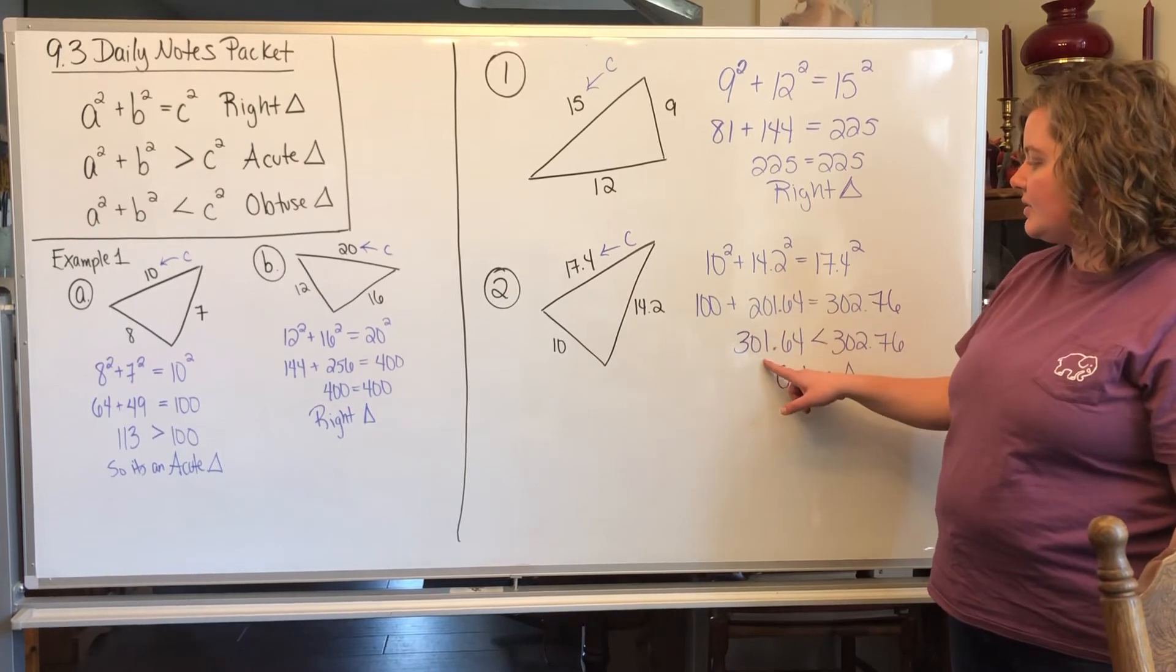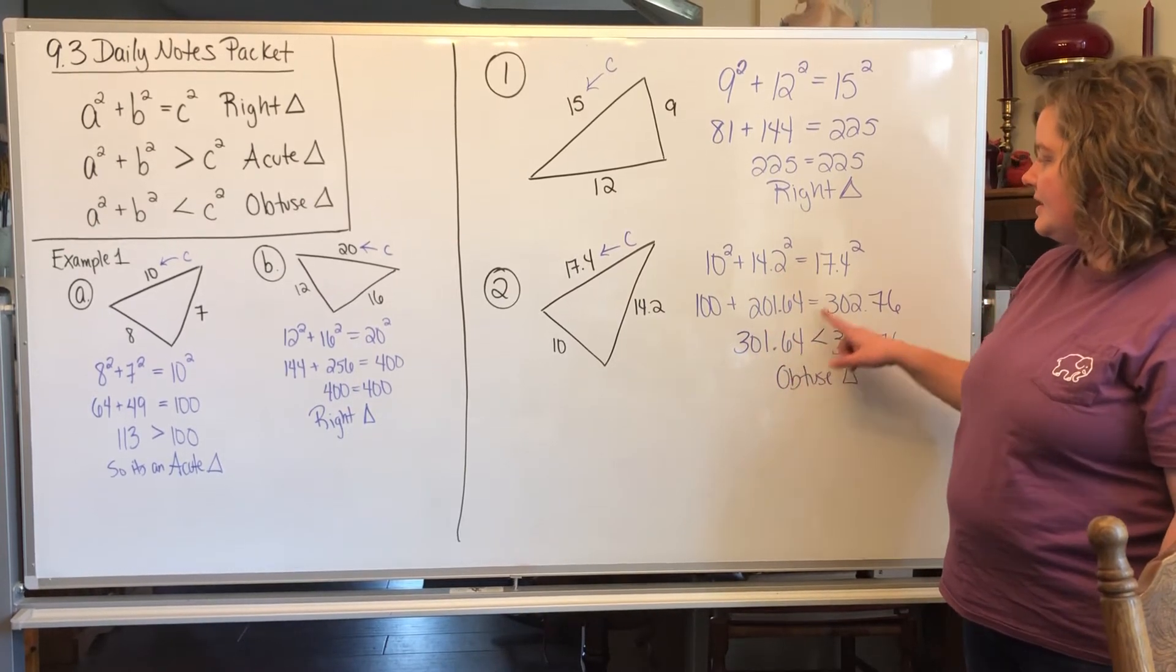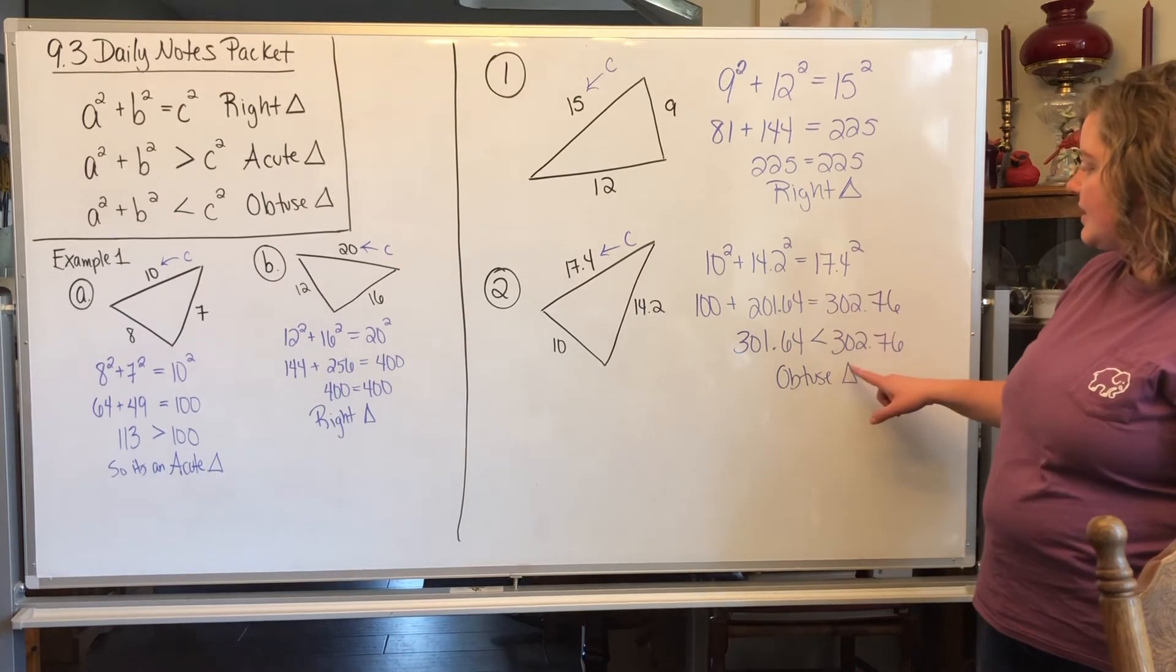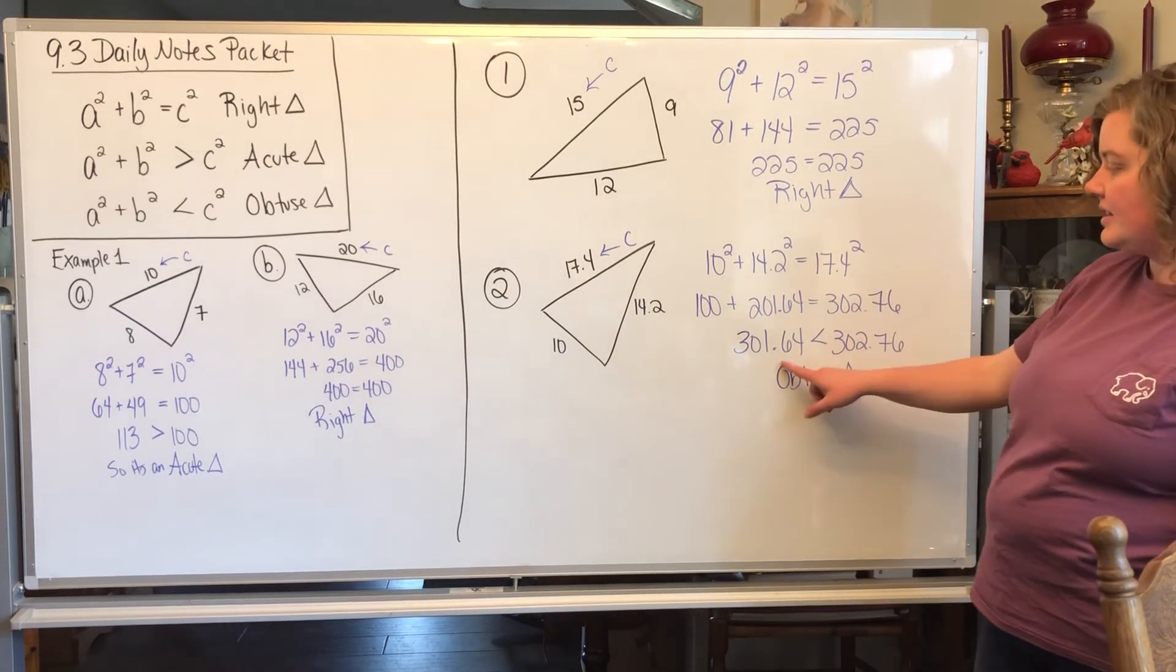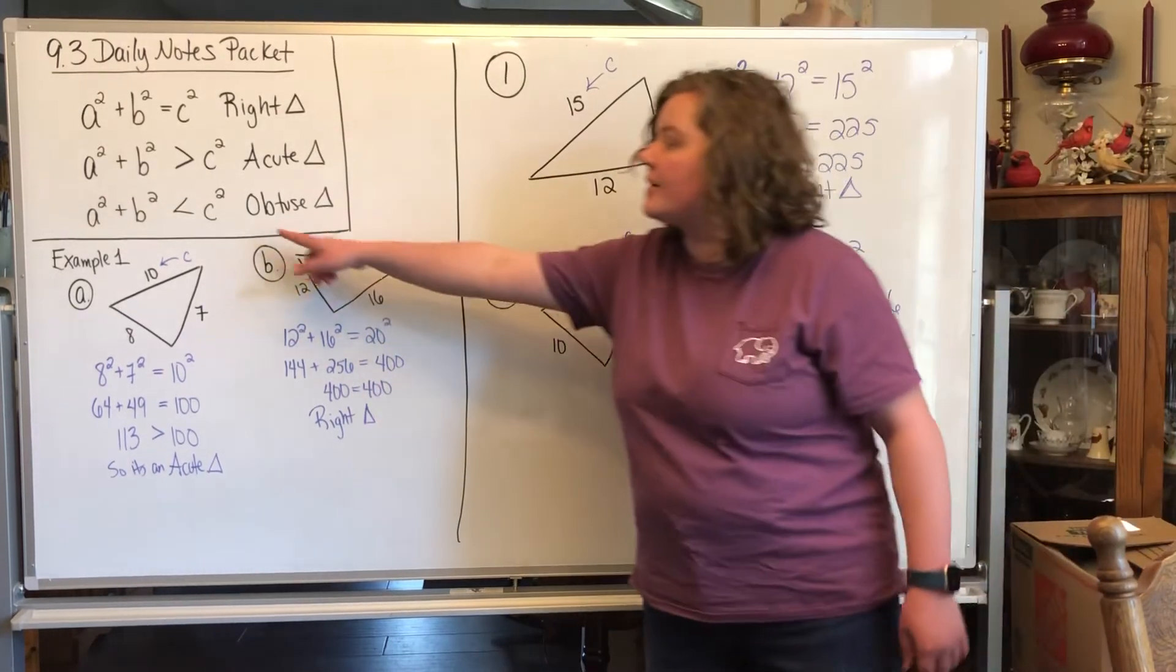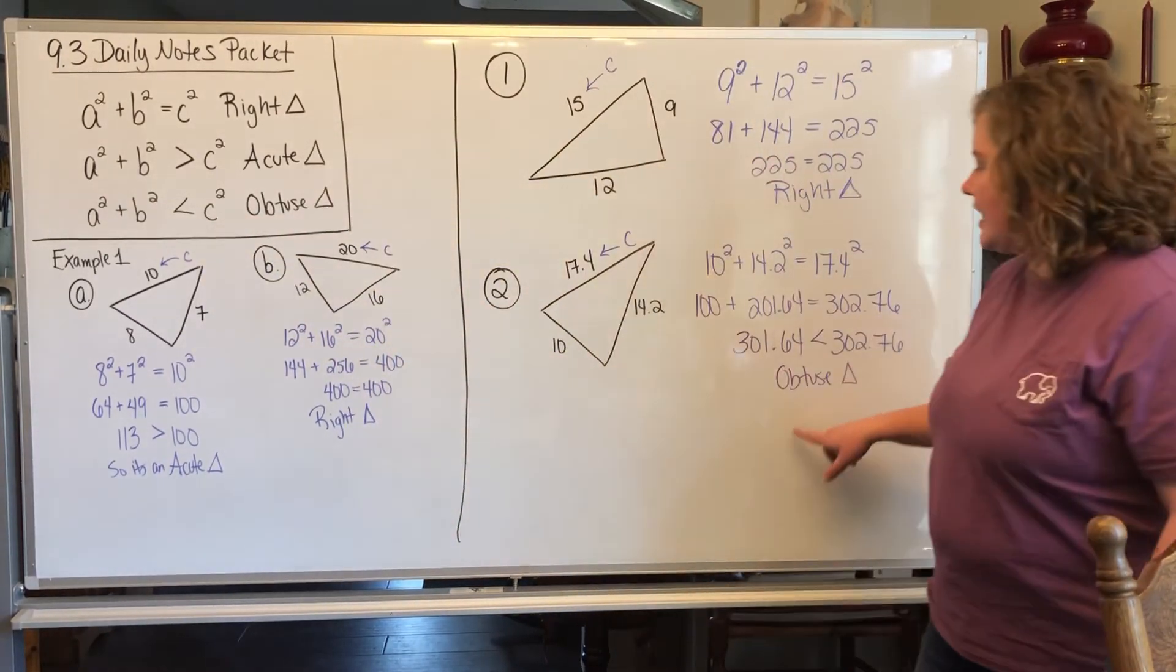So when you do those and add, you get 301.64. 17.4² gives you 302.76. So since this is bigger than this side, so the c² is bigger, it's going to be an obtuse triangle.